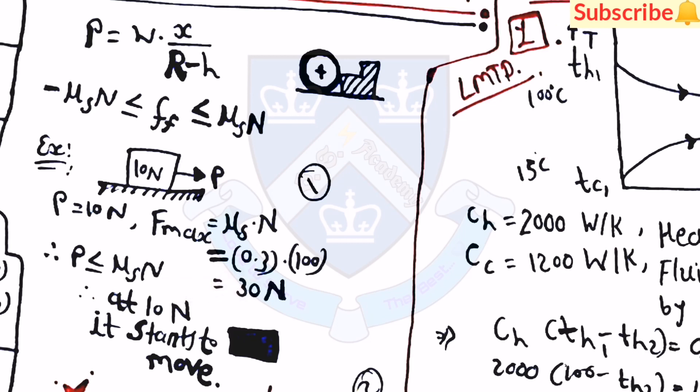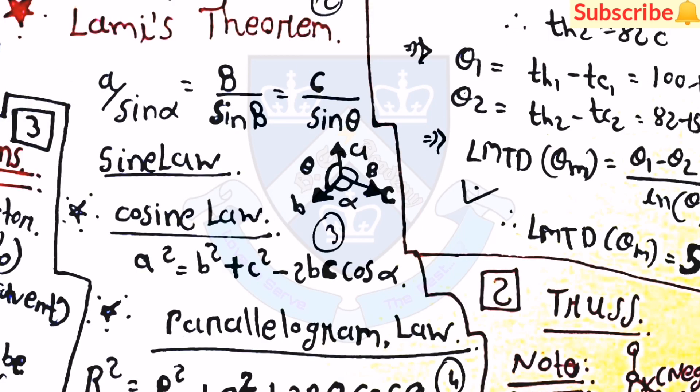At P which is equal to 10 N the block starts to move. Then after, the Lami's theorem is there: a upon sin alpha is equal to b upon sin beta is equal to c upon sin theta. Then it is also known as the sine law.